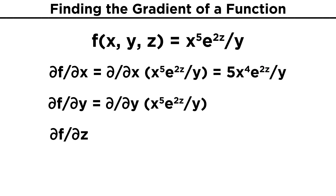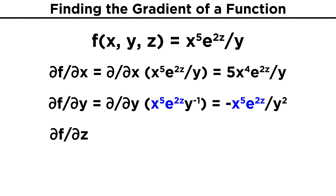Now differentiating with respect to y and keeping x and z constant, one over y is the same as y to the negative one. So again, using the power rule, we bring the negative one out front and subtract one from the exponent to get negative y to the negative two, which is the same thing as negative one over y squared. Combining this with the constant terms, we get negative x to the fifth times e to the two z over y squared.